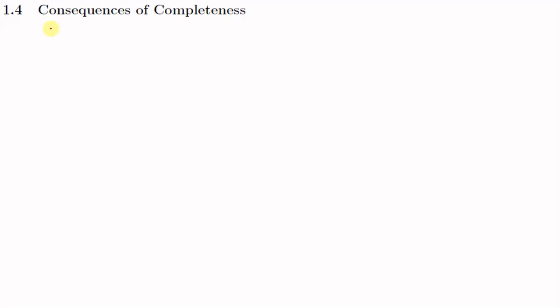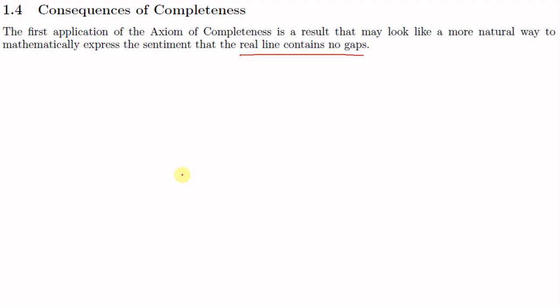We are now moving on to our next section, Section 1.4: Consequences of Completeness. In this section we shall discuss some important theorems and results which occur as an immediate consequence of the axiom of completeness.